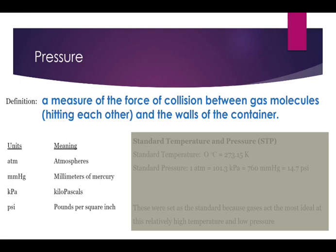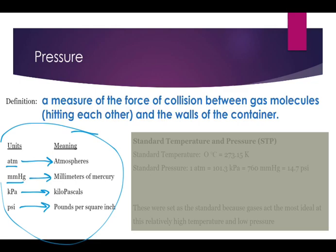There are a lot of different pressure units, and you can see them all kind of lined up here. Atm is one of the most common units, and that stands for atmospheres. MMHg is technically millimeters of mercury. Kpa is kilopascals, and psi is pounds per square inch.